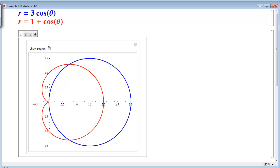We are interested in finding the area of the region enclosed by both curves. This is the common interior of the cardioid and the circle. In order to find this area, we're going to need to figure out where these curves intersect.